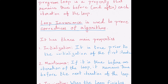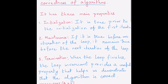In this video we'll study the concept of loop invariance and how we apply it to prove the correctness of algorithms. This video will look at merge sort and prove its correctness using loop invariance. Loop invariance of a computer program is a property that remains true before and after each iteration of the loop, and it is useful to prove the correctness of algorithms.